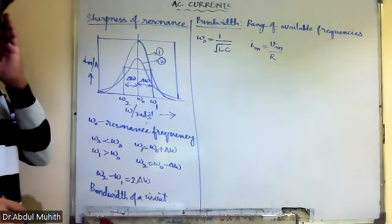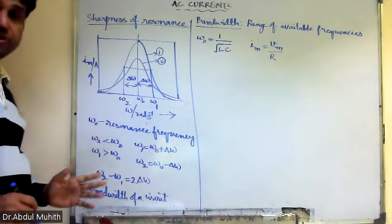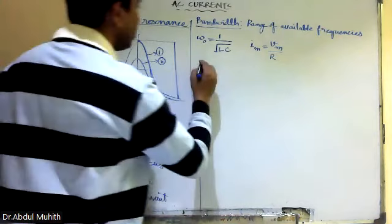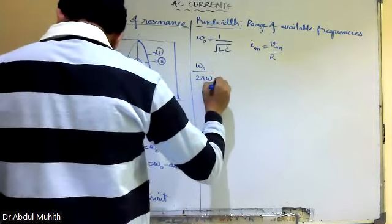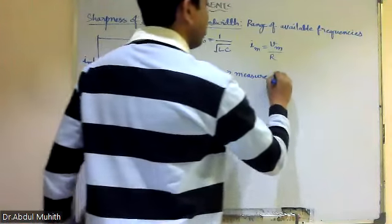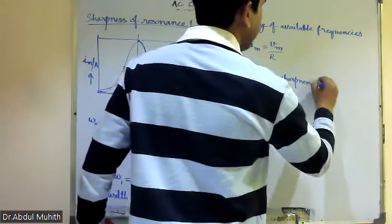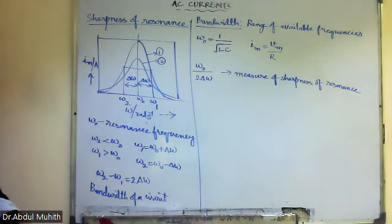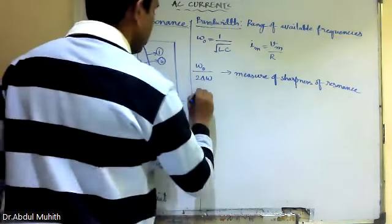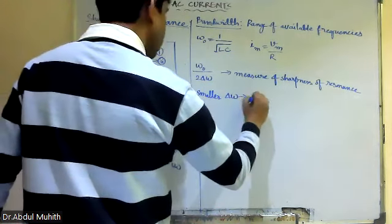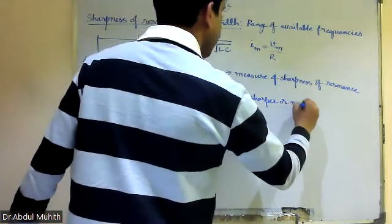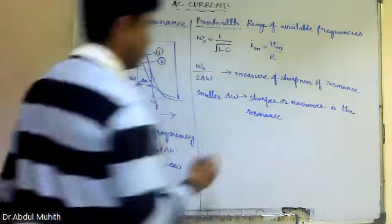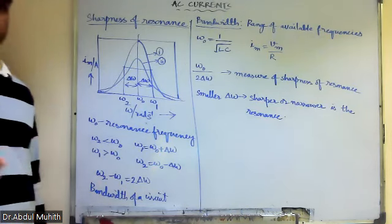Omega zero divided by two Delta Omega is known as the measure of sharpness of resonance. Smaller Delta Omega means the resonance is sharper or narrower. So smaller Delta Omega means the value is narrow — the resonance is very narrow or sharp.